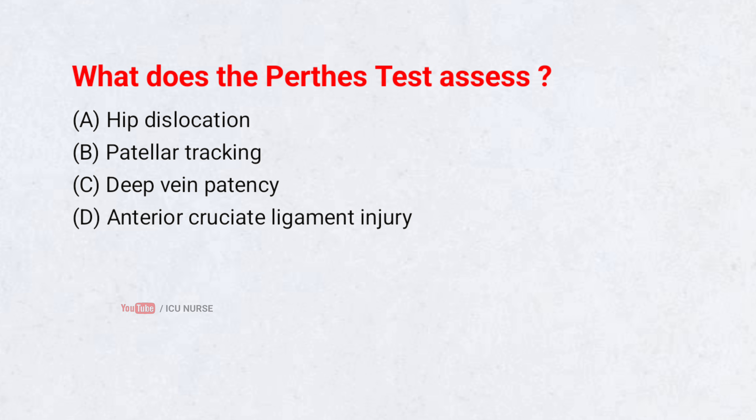What does the Perthes test assess? A. Hip dislocation. B. Patellar tracking. C. Deep vein patency. D. Anterior cruciate ligament injury. Correct answer: C.